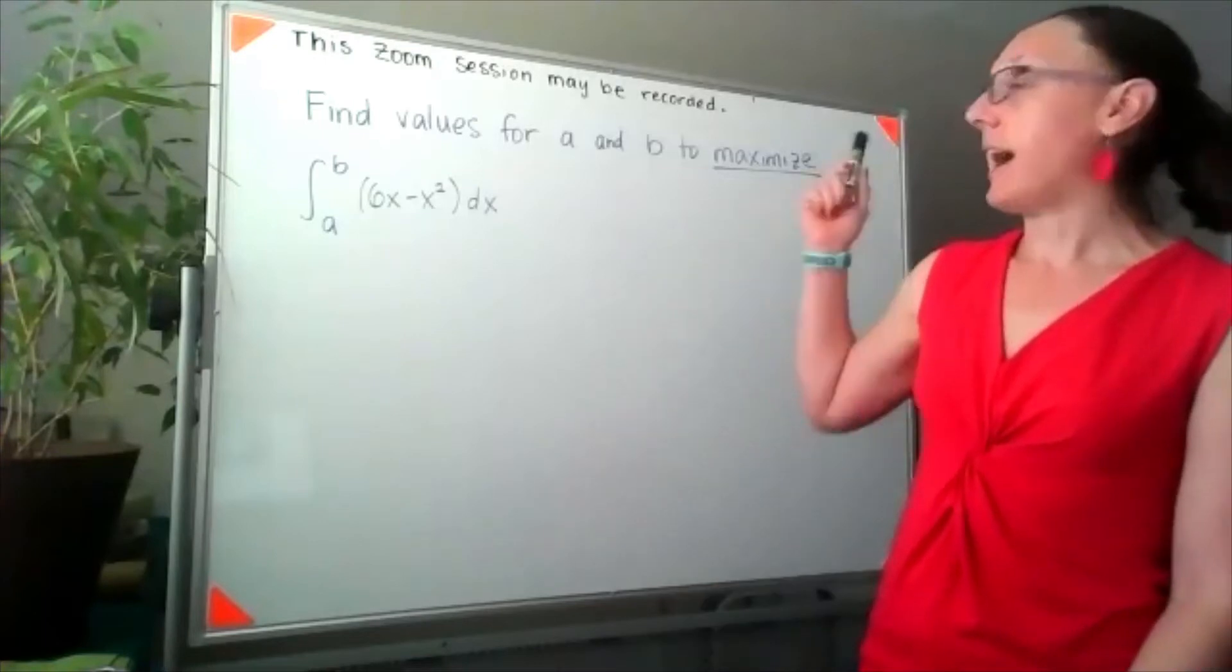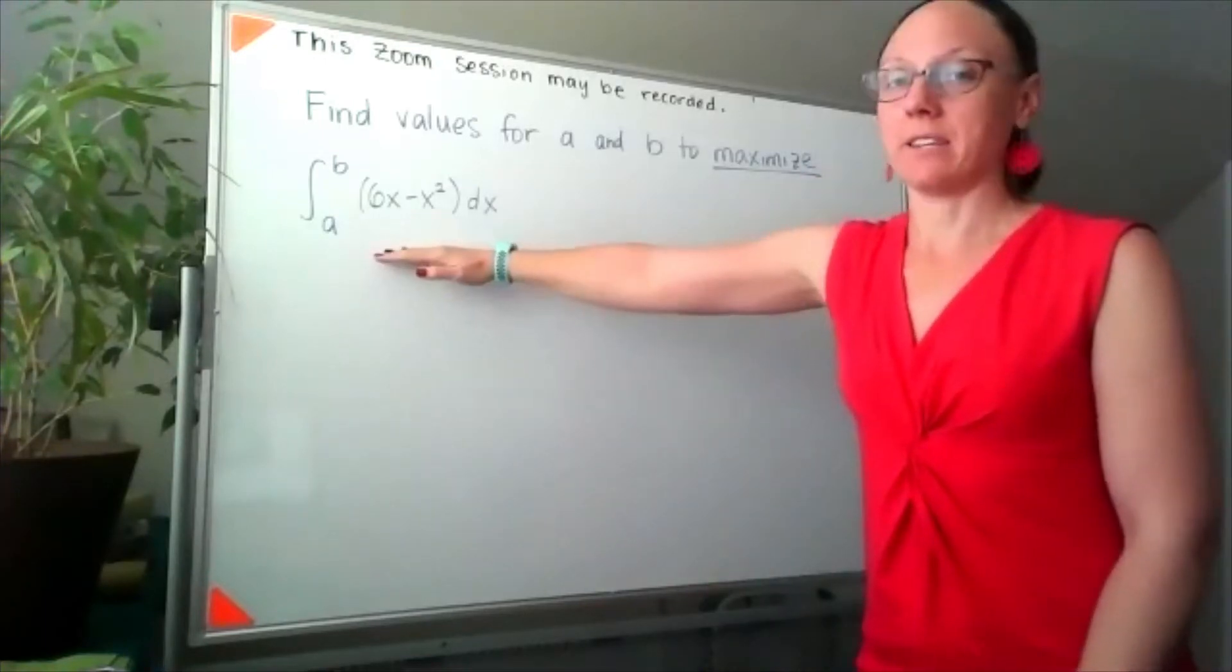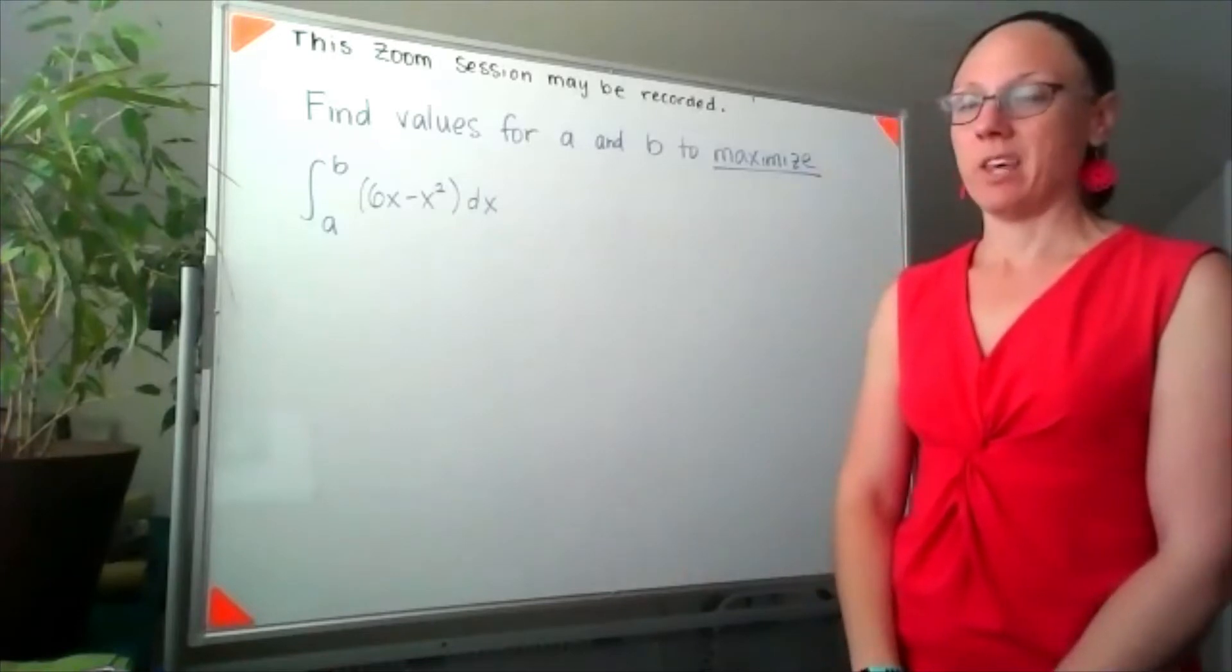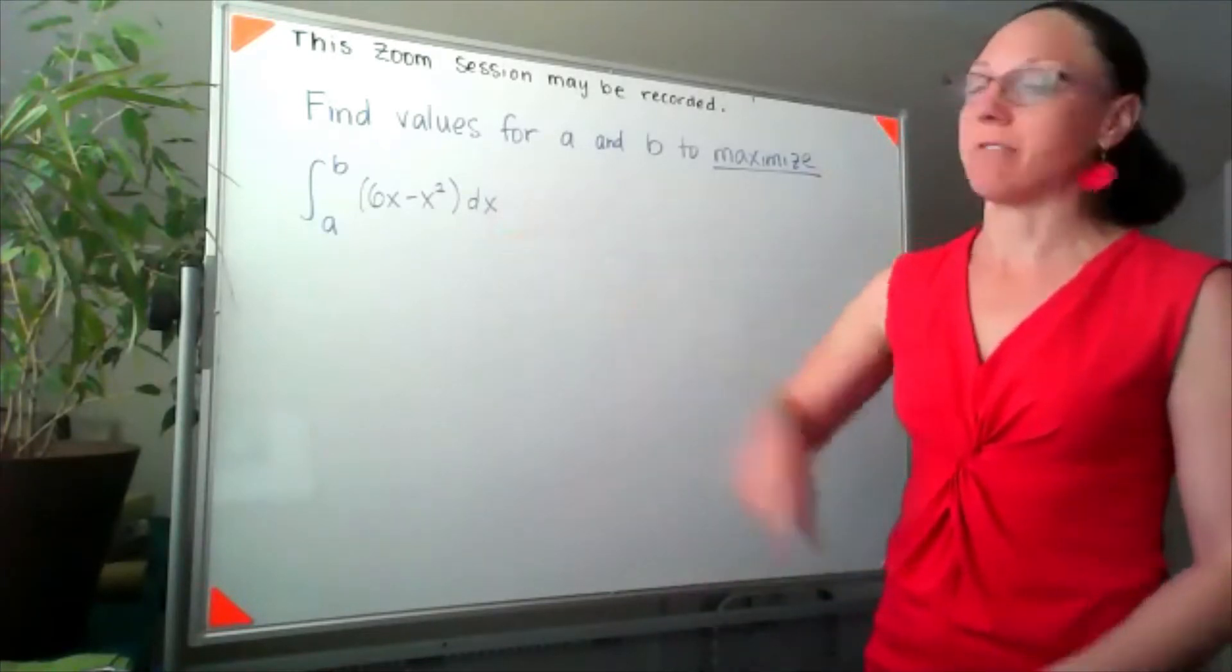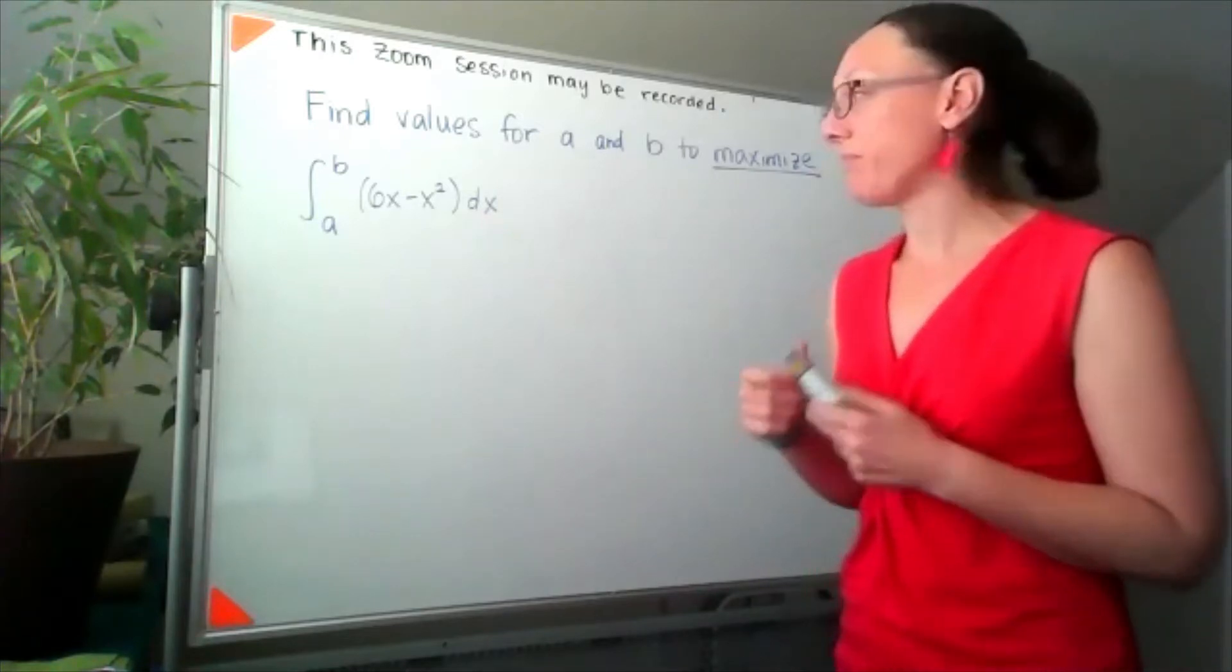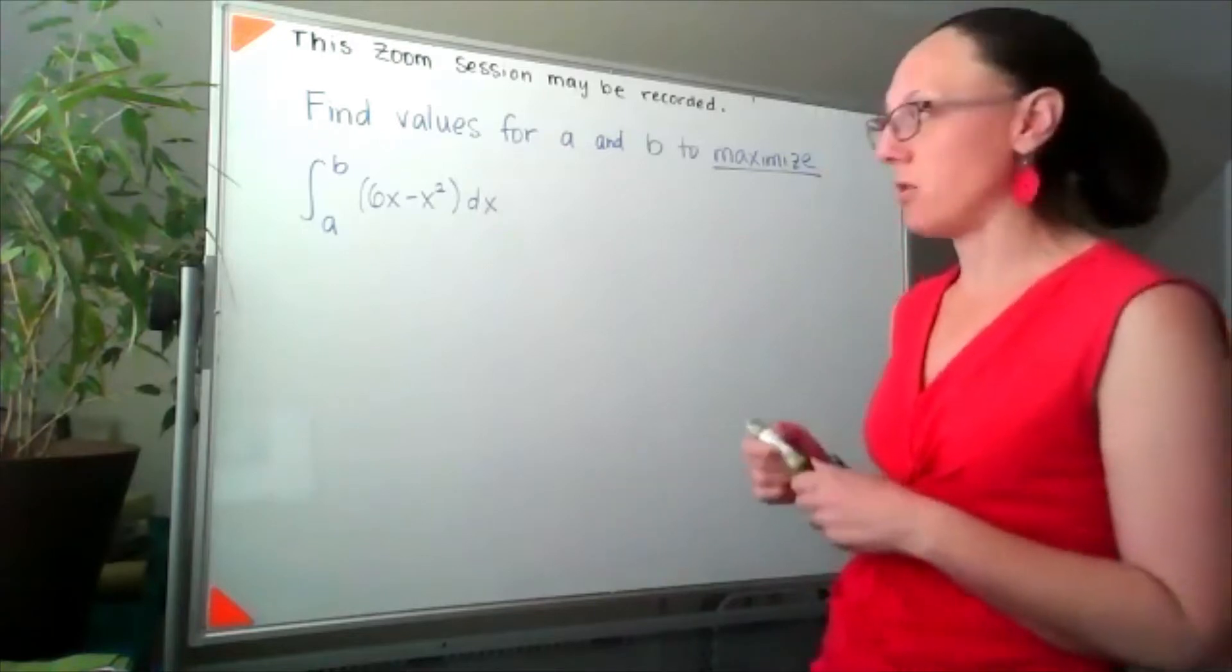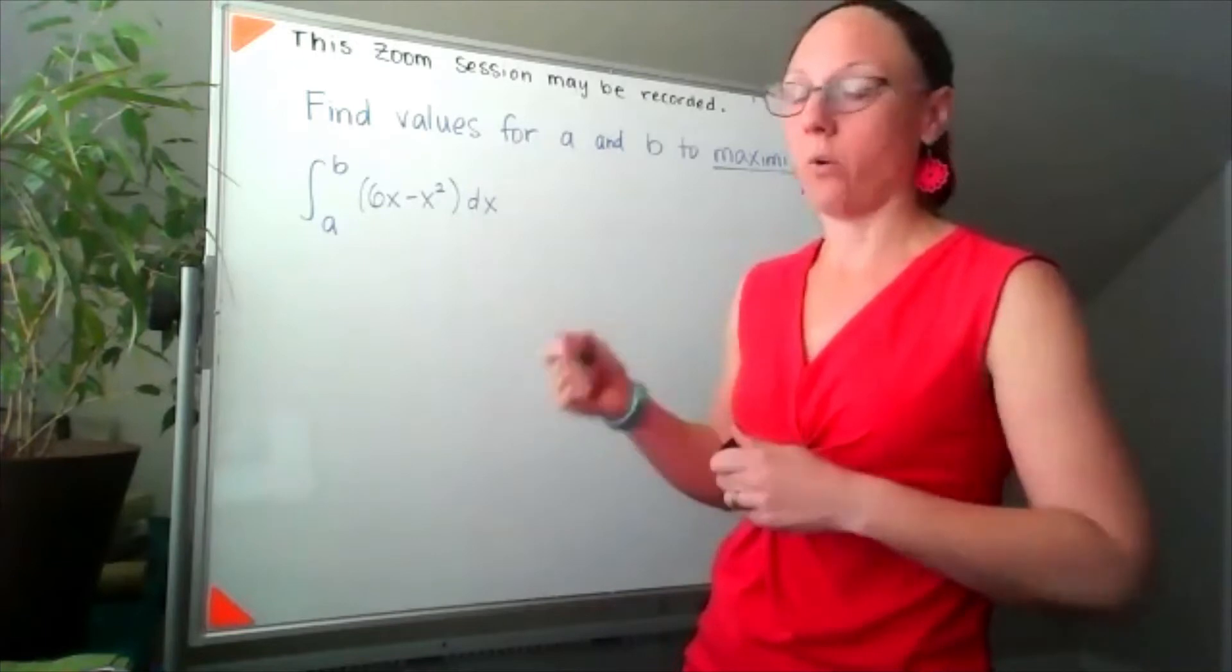The idea here is I want to find values for a and b to maximize this integral. If I'm going to do that, I really need to know what a graph of this function looks like. You could pull that up on Desmos, but I'm going to go with this is something that we should know how to at least sketch a quick graph of.